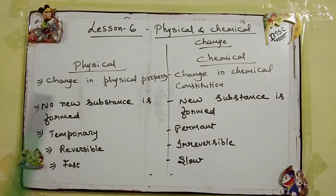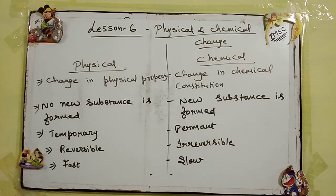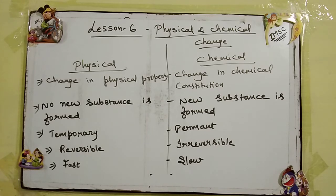Physical change में only physical properties change. For example, melting of ice, melting of wax, glowing of bulbs. इनमें सिर्फ state change हो रहा है — अगर ice melt हो रही है तो it gets converted from ice to water, सिर्फ solid से liquid में convert हुआ. रहेगा तो वो पानी ही, भले ice form में हो या water form में, wax wax ही रहेगा, भले liquid form में हो, solid form में हो, या gas form में.